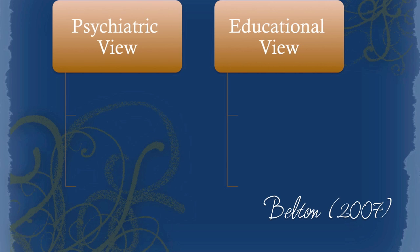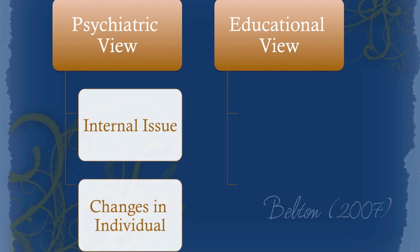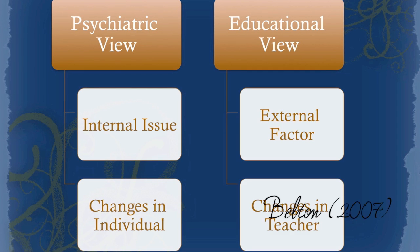There are two main views of apathy. The psychiatric view sees apathy as an internal issue that can be remedied by changes in the individual. Educationally, apathy is seen as an external factor that is best handled by changing teacher behavior.